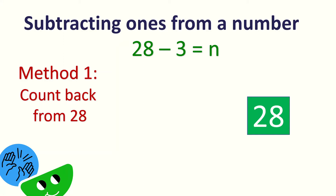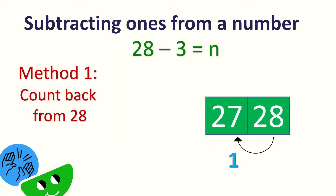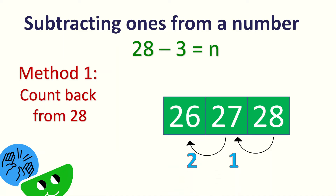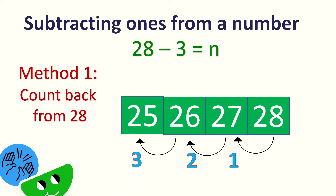Before 28, what's the number? 27. Very good, that's the first time. And then before 27? Yes, it's 26. Second time. And then before 26? Right, it's 25. So, 28 minus 3 equals 25.